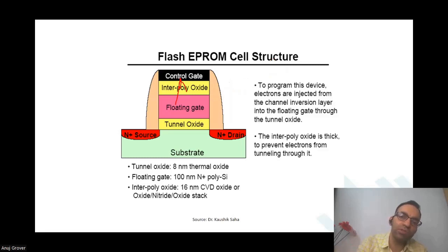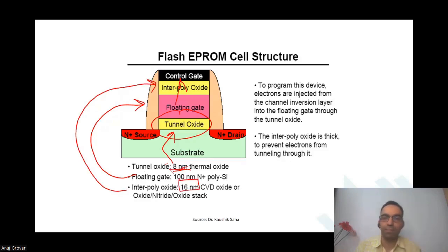The interpoly oxide is designed thick to prevent any tunneling from having to happen from floating gate to the control gate. At least there should be no tunneling that should happen because of this interpoly oxide. All the tunneling that you want to do, we want to do across the tunnel oxide only. So tunnel oxide is 8 nanometers, floating gate is 100 nanometers, and the interpoly oxide is 16 nanometers. So electrons can tunnel from here to here, but not from here to here. Is this okay?